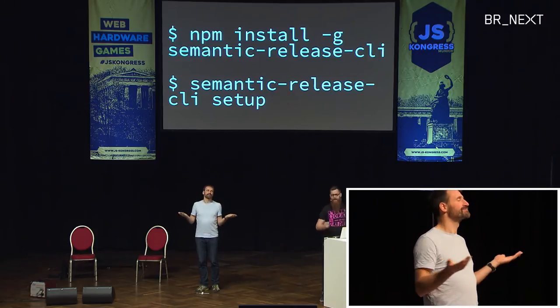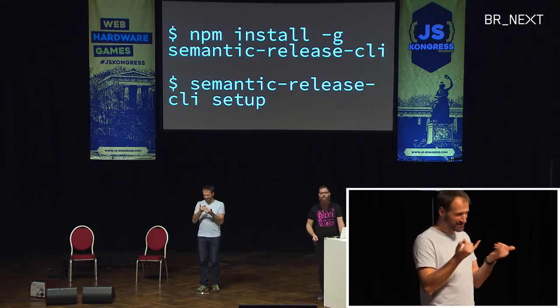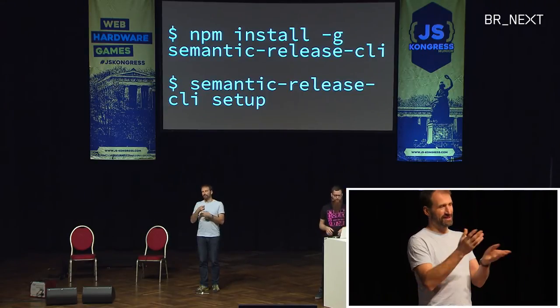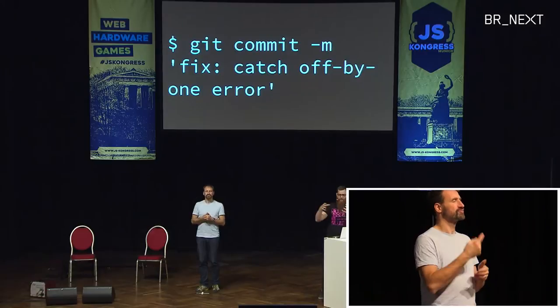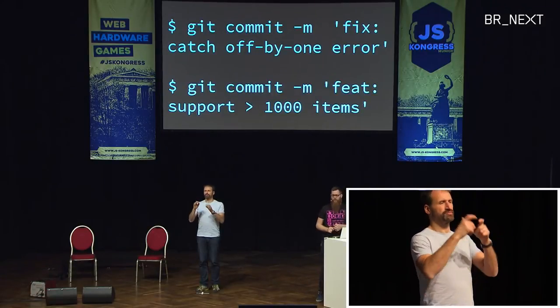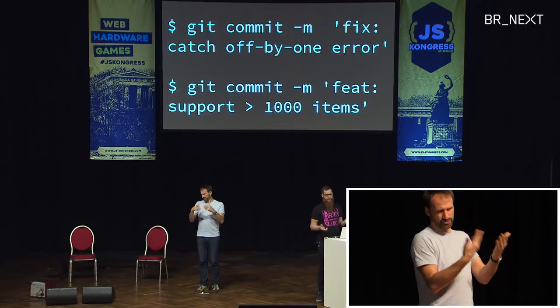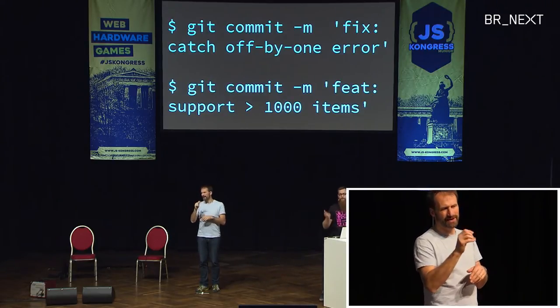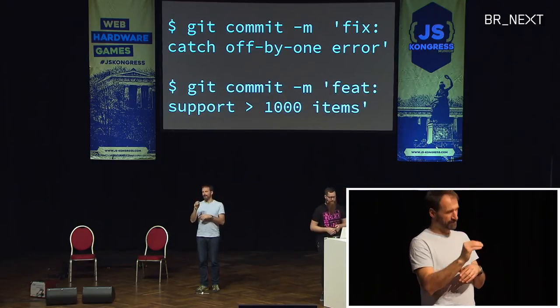So we built a tool called Semantic Release. This is how you get started: npm install -g semantic-release-cli, then go into your project folder and say semantic-release-cli setup — it walks you through a little wizard and then you're good to go. This is what the workflow now looks like. You make a git commit; we're fixing an off-by-one error, so the commit message starts with "fix:". Next thing, a new feature — we start supporting more than a thousand items — so the message starts with "feat:". Then another fix, but it's a breaking change, so clients must understand the new error format.